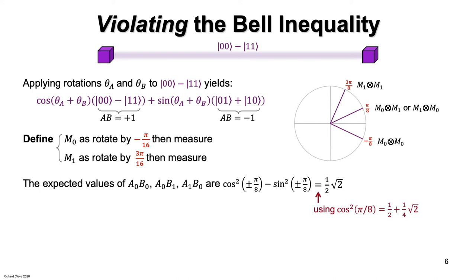And in the case where both measurements are M one, the expected value of minus the product of the outcomes AB is this, which also evaluates to one half times the square root of 2.